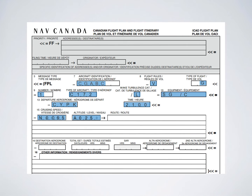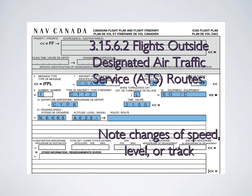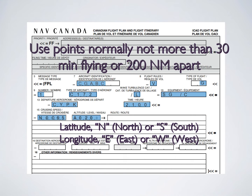The routing section: since this is a VFR flight, you're probably not using ATS routes or IFR routes. Basically, what they want you to denote here are changes of speed, level, or track. If you're going to change your speed, altitude, or heading, they want you to put the GPS location. They also want points no more than 30 minutes flying time or 200 nautical miles apart.